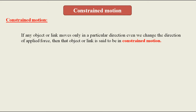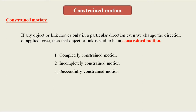First, the definition of constrained motion: if any object or link moves only in a particular direction, irrespective of the direction of the applied force, then the object or link is said to be in constrained motion. The three types are: completely constrained motion, incompletely constrained motion, and successfully constrained motion.